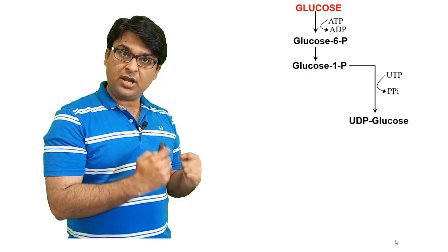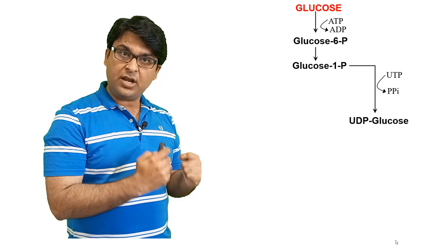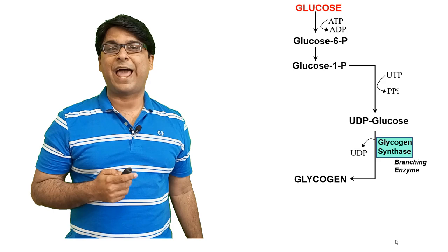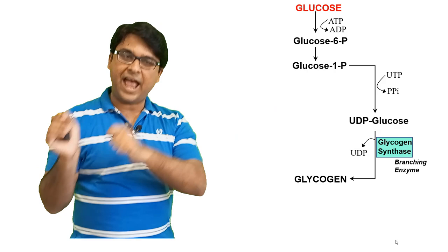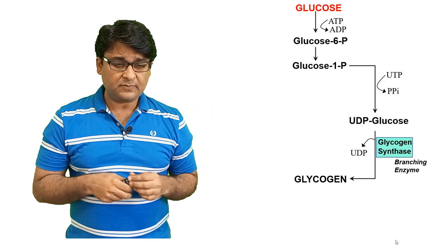Now comes a major enzyme that you must remember for glycogen synthesis — the enzyme is called glycogen synthase. The job of glycogen synthase is to make glycogen. Glycogen synthase adds glucose units from UDP glucose onto the growing glycogen chain, and the UDP is released back. We use UDP to transport glucose into a glycogen molecule.